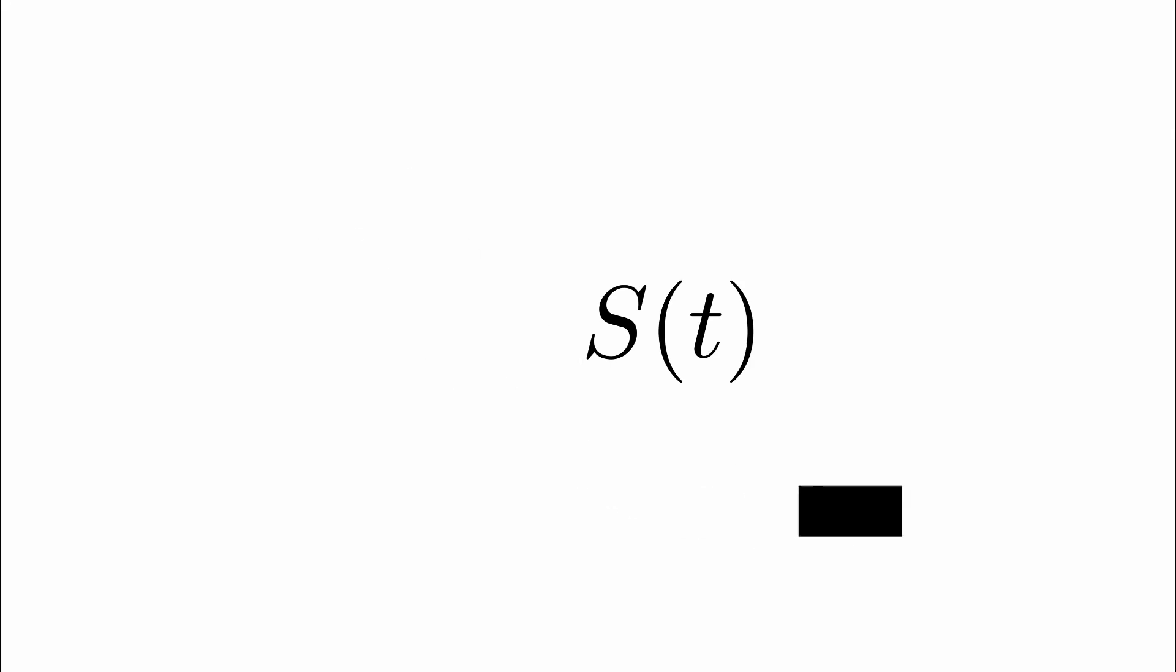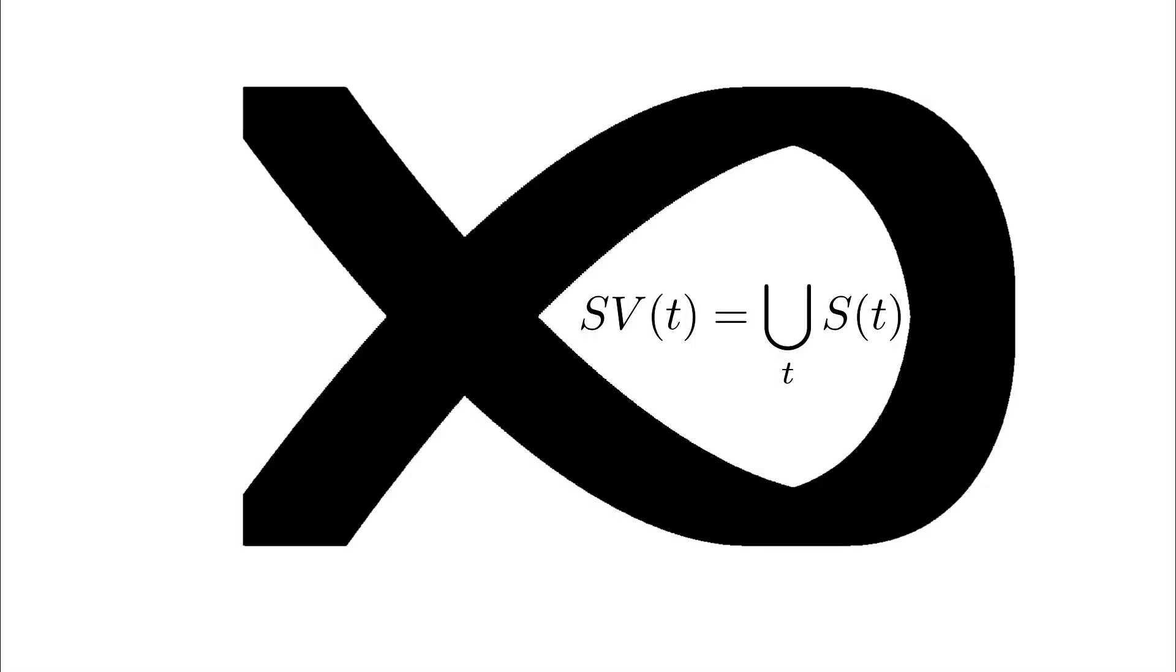Given an input solid and a trajectory, the output swept volume is the continuous union along the trajectory.